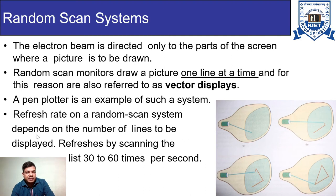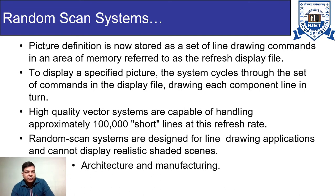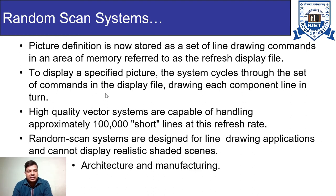The refresh rate on a random scan system depends on the number of lines to be displayed. Since these systems are designed for drawing lines, the refresh rate depends on how many lines are shown on screen — typically 30 to 60 times per second. Picture definition is stored as a set of line drawing commands in an area of memory referred to as the refresh display file. To display a picture, the system cycles through the set of commands in the display file, drawing each component line in turn.